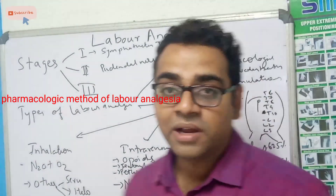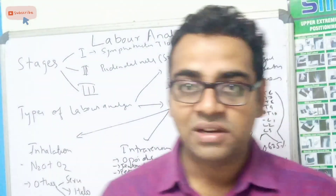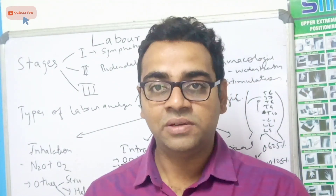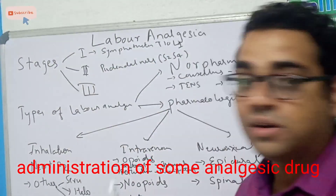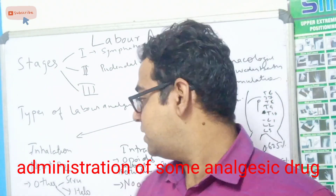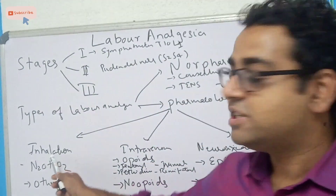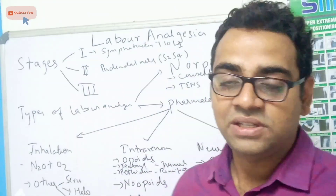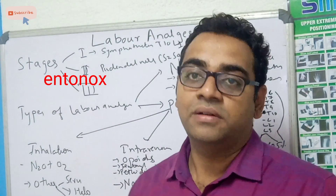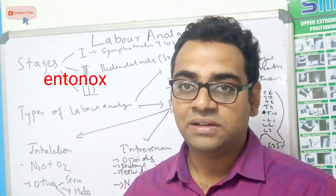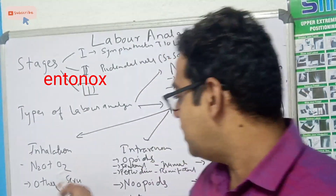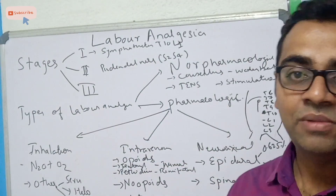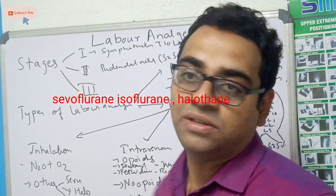Coming to pharmacologic methods of labor analgesia — pharmacologic means we give some drug. The routes of drug administration include inhalational, meaning through gases. These include N2O and oxygen, which is called Entonox, used for giving analgesia via face mask using a separate Entonox cylinder. Other gases that can be used include sevoflurane, halothane, and isoflurane.